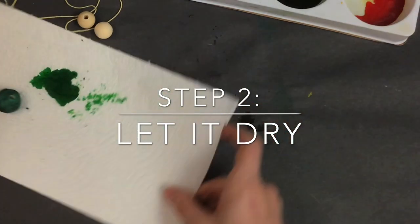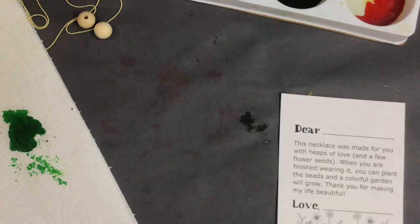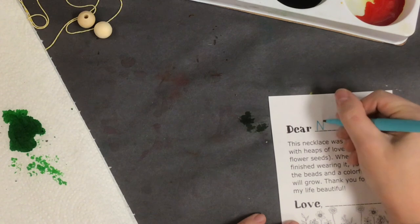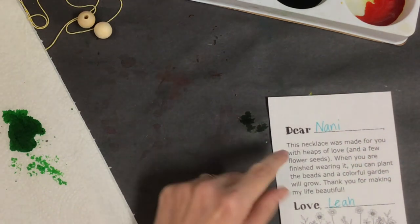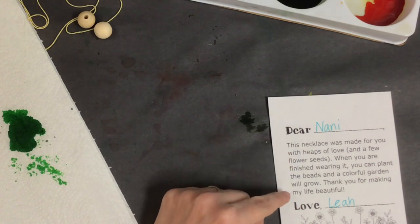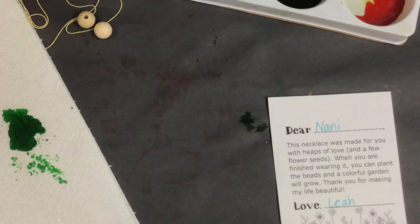Step number two, you're going to let it dry. While I let mine dry, I actually have a little note because I'm going to send this home for my nanny. I wrote Dear Nanny on the top of the letter and wrote my name. If you're in the classroom, you will follow that step. If not, you might consider giving this to someone and writing a little note to tell them that you love them.